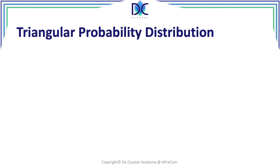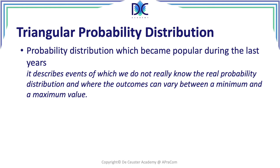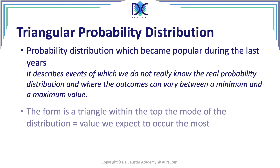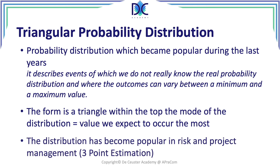The last distribution is the triangular probability distribution. It has become more and more popular and describes events where we do not really know the real probability distribution, with outcomes that vary between a minimum and a maximum value. The top of the triangle is the mode — the value with the highest probability — and this distribution has become very popular in risk and project management based on the three-point estimation.